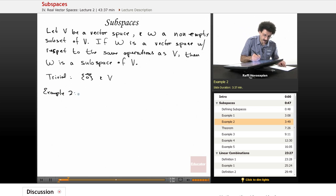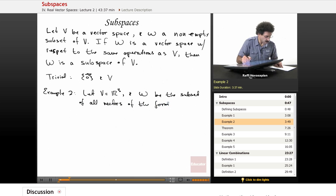Example two. We'll let V equal R³, so now we're talking about three space, and W be the subset of all vectors of the form (a, b, 0).